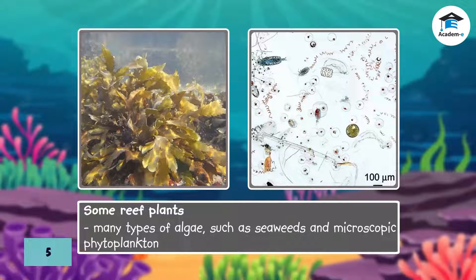Marine plants in the coral reefs include many types of algae, such as seaweeds and microscopic phytoplankton.